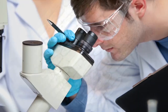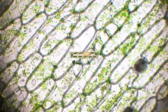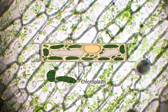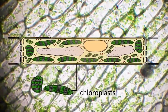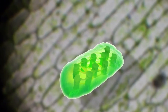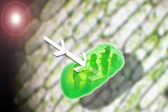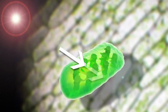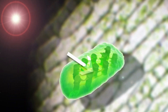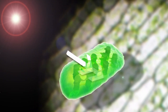Many plant cells, particularly those found in the leaf, contain organelles called chloroplasts. These organelles are where photosynthesis takes place. Chloroplasts contain photosynthetic pigments such as chlorophyll that are able to absorb light energy at different wavelengths of light. This allows the plant to absorb the maximum amount of sunlight in order to make as much glucose as possible.